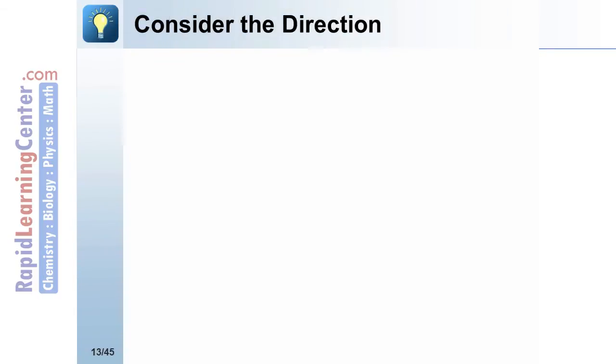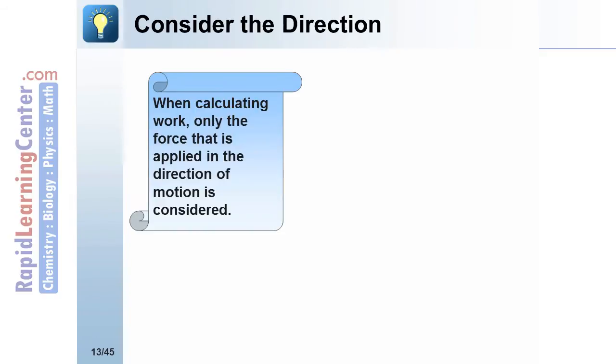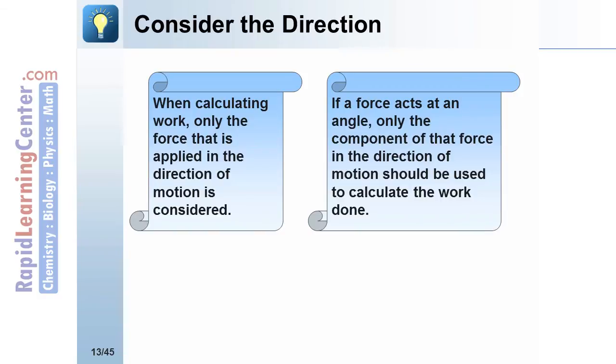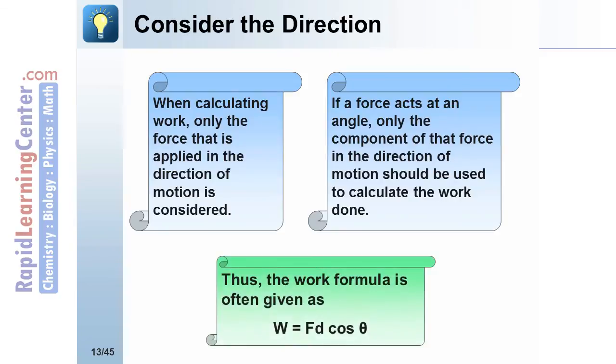Consider the direction. When calculating work, only the force that is applied in the direction of motion is considered. If the force acts at an angle, only the component of the force in the direction of motion should be used to calculate the work done. This is the reason that typically the work formula is given as W equals F times D times cosine theta, where cosine theta, or theta, is the angle between the force and the distance.